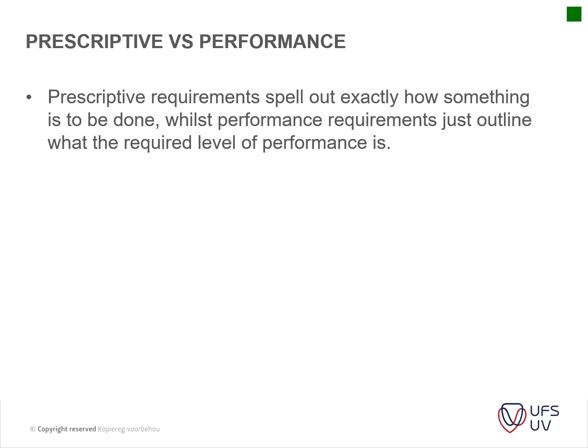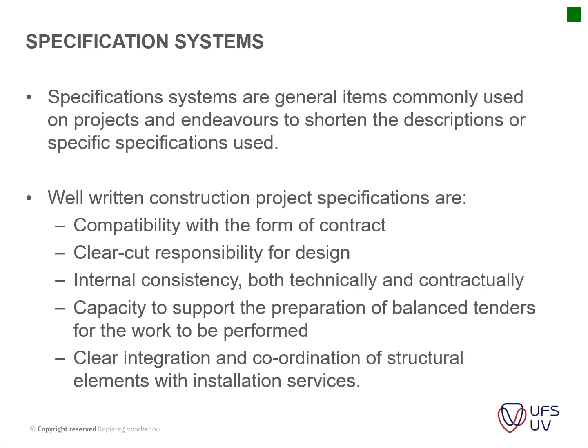Prescriptive requirements for a solar installation would specify the exact size of solar panel, the make of the panels, the type of cable to be used, and so on - it's very specific to the installation. Performance requirements just prescribe what type of performance is needed. That's the difference between prescriptive and performance type specifications.